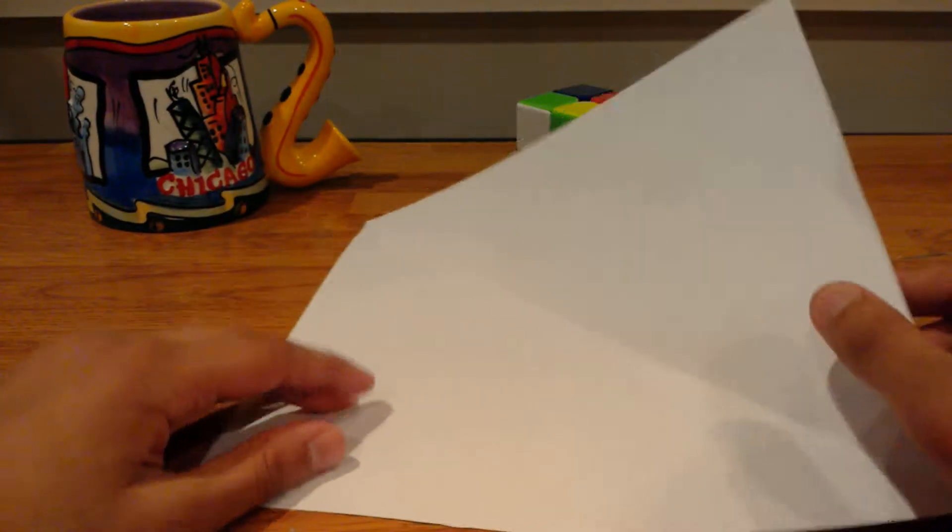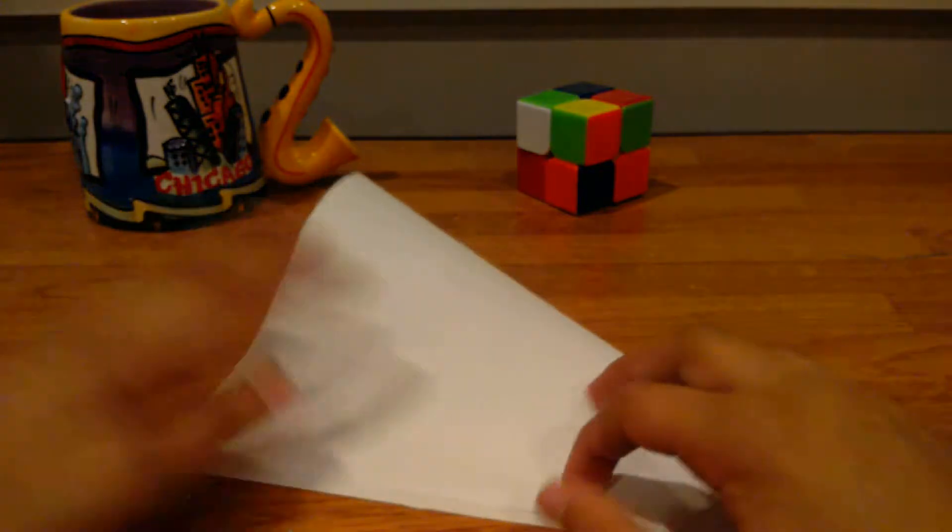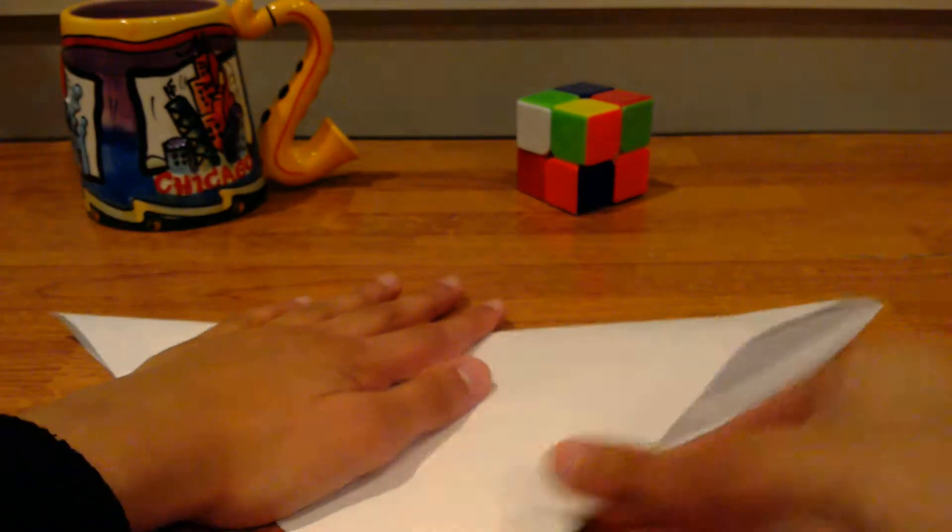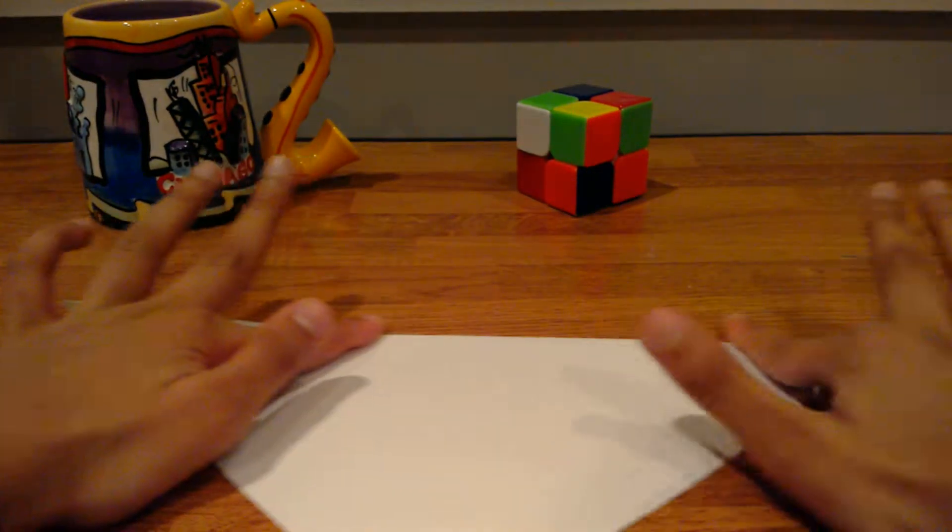You're going to take a square piece of paper and fold it in half diagonally. Make the edges line up. We're going to crease. And you see we have this triangle here.